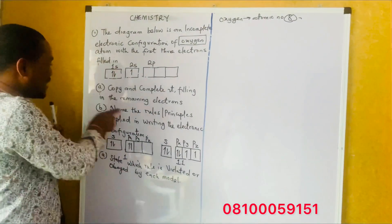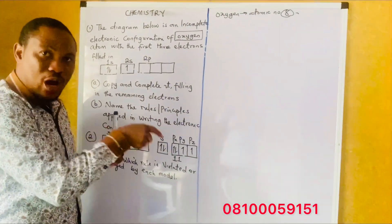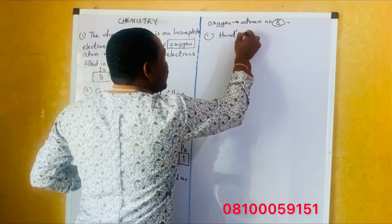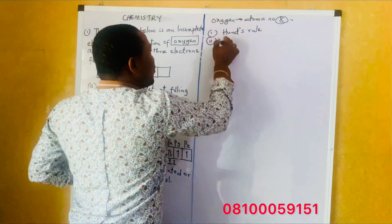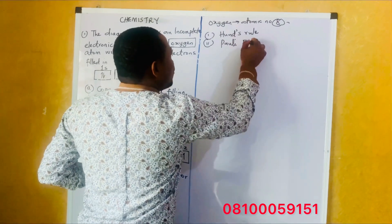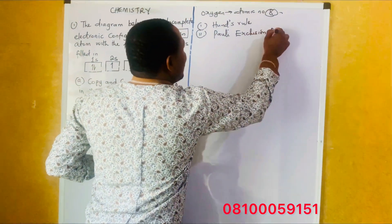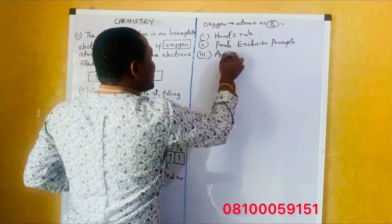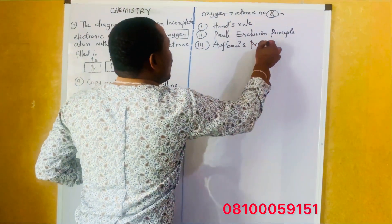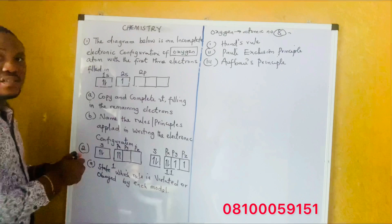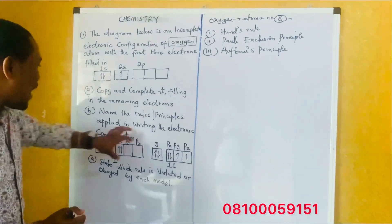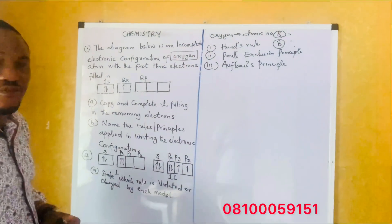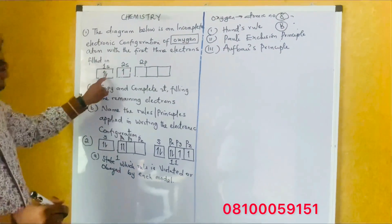So name the three rules. Number one, we have Hund's rule. Very important. Number two, we have the Pauli exclusion principle. And the last one, we have the Aufbau principle. These are the three rules. So the answer to part B — name the rules or principles applied in writing electronic configuration — the answer is these three rules. So if you write this, you get the full point.